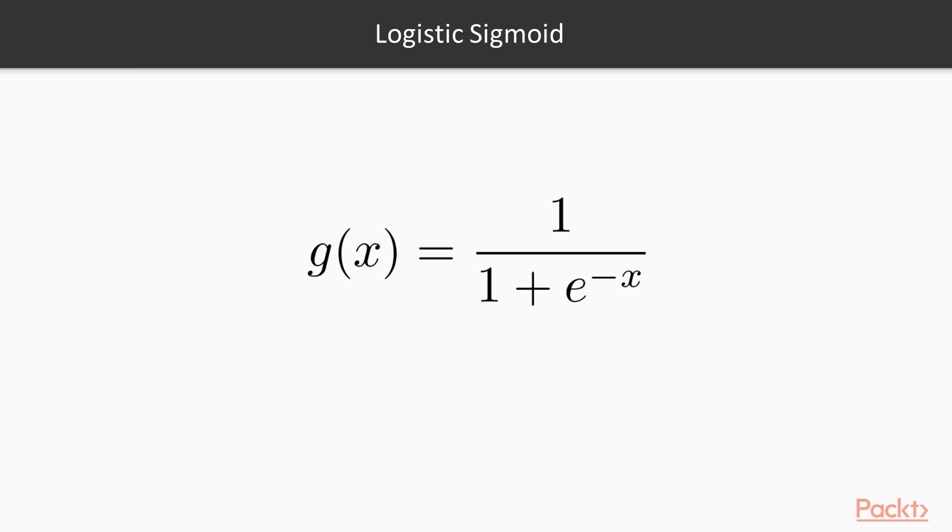Another common activation function is the logistic sigmoid. Here is the equation. X is the weighted sum of the inputs. Unlike the step function, the logistic sigmoid is differentiable. This difference will become important when we discuss artificial neural networks.